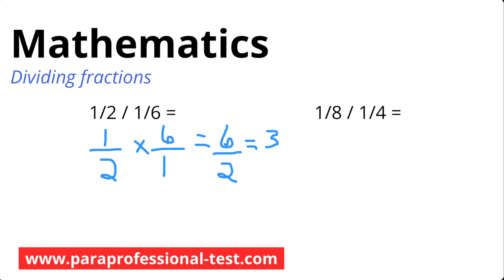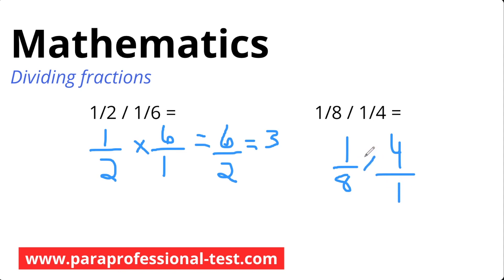Let's go on to the next problem. I'll keep the first fraction as it is, flip the second fraction, and make it a multiplication problem. So 1 over 8 times 4 over 1. Now it's a multiplication problem. The top multiplied together is 4, the bottom multiplied together is 8. I ask myself how I can reduce this — 4 over 8 is the same as 1 half. Did you get 1 half as well? Awesome!